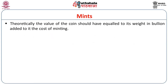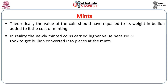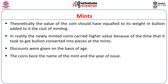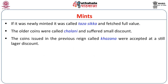Theoretically, the value of a coin should have equaled its weight in bullion plus the cost of minting. In reality, newly minted coins carried higher value because of the time taken to convert bullion into coins. Discounts were given based on the age of coins — older coins had reduced value. Coins bore the name of the mint and the year of issue. Newly minted coins were called Taza Sikka; older coins were called Chalani; and coins from previous eras, called Khazana, had to be accepted at a larger discount, though the discount did not exceed the minting cost.